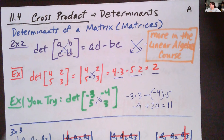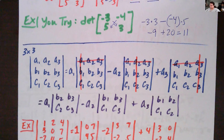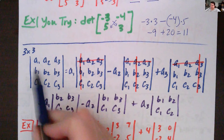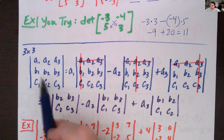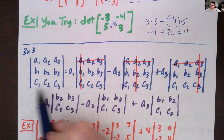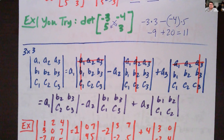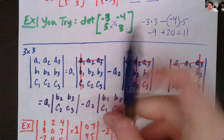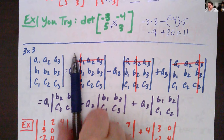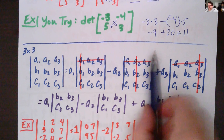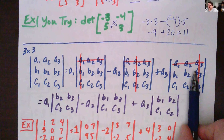That's in two dimensions. If we kick it up a notch and go into three dimensions, we've got A1, A2, A3, B1, B2, B3, C1, C2, C3. The way you do a determinant for a 3 by 3 matrix is you go along one row and choose a different column each time.